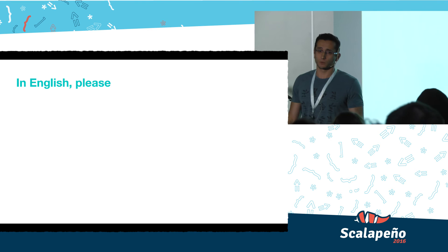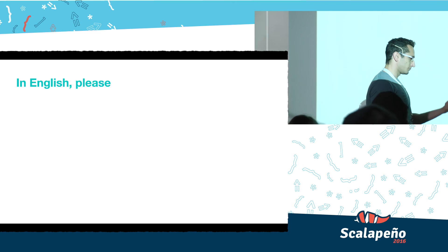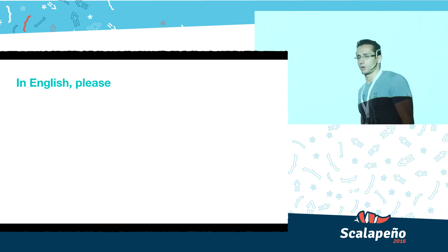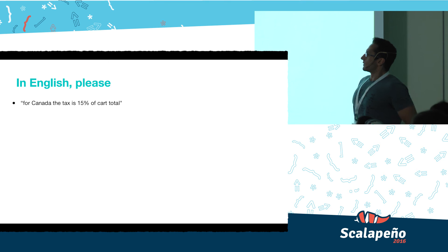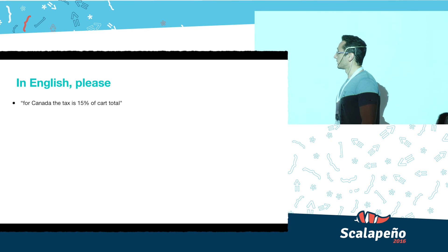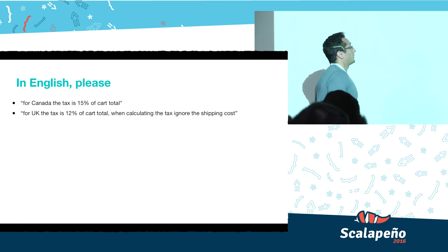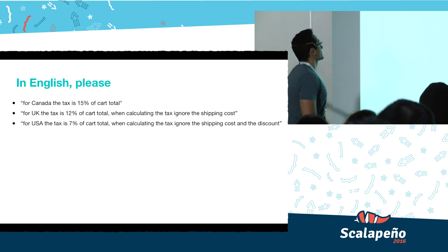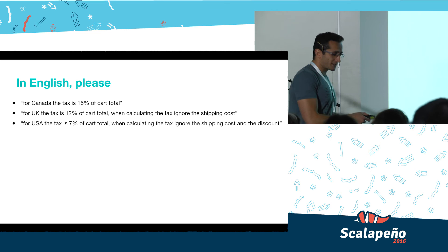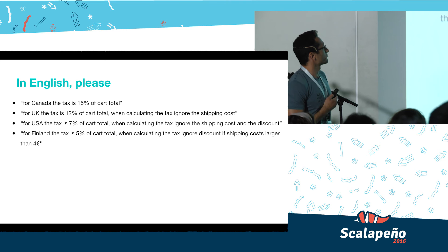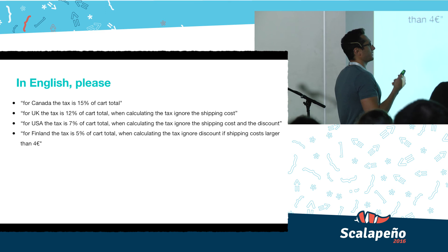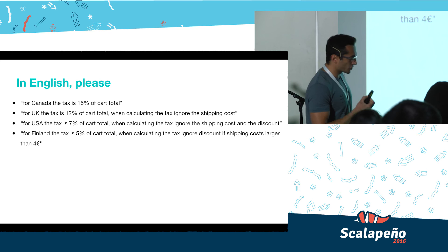Let's say our imaginary product manager comes to us and says: 'I would like a system that supports five billing rules. For Canada, the tax rule is 15% of cart total. For UK, it's 12% of cart total, but ignore shipping costs when calculating tax. For USA, it's 7%, and when you calculate the tax, ignore both discount and shipping. For Finland, it's 5% tax, but ignore the discount only if the shipping cost is larger than 4 euros. And for Israel, we'd like a special tourist custom tax just for fun.'